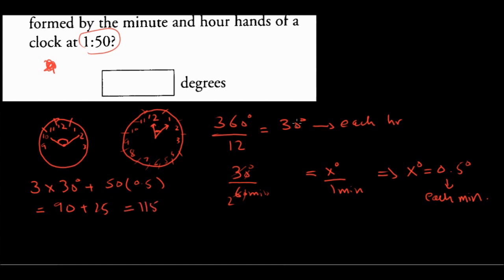Adding these together: 90 degrees from the three hour portions plus 25 degrees for the 50 minutes the hour hand has moved past 1 gives a total of 115 degrees. So the angle between the minute and hour hands at 1:50 is 115 degrees. Each hour on the clock represents 30 degrees, and each minute represents 0.5 degrees.